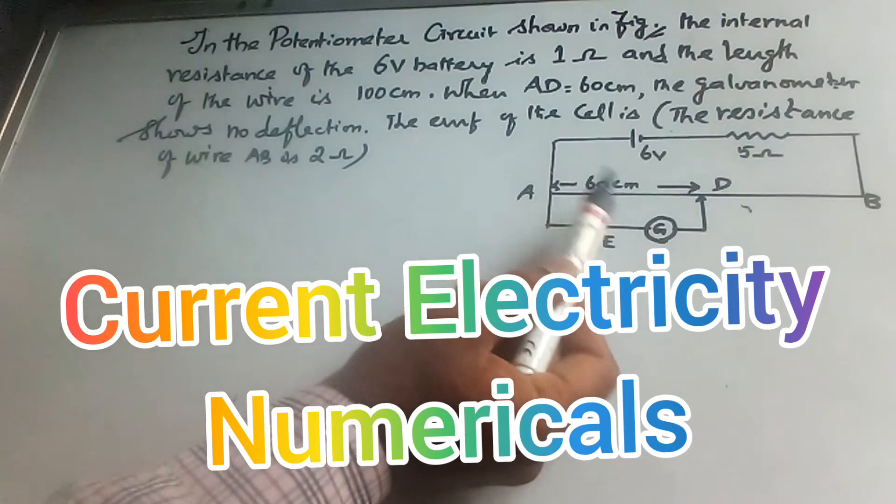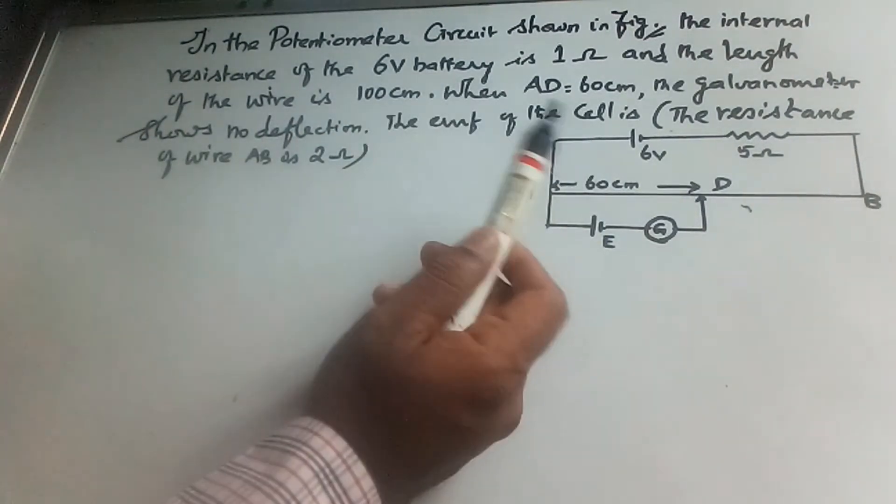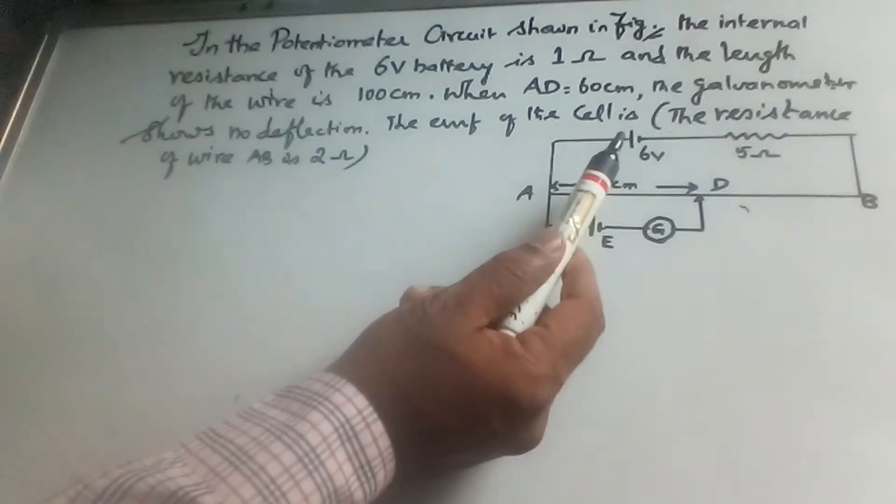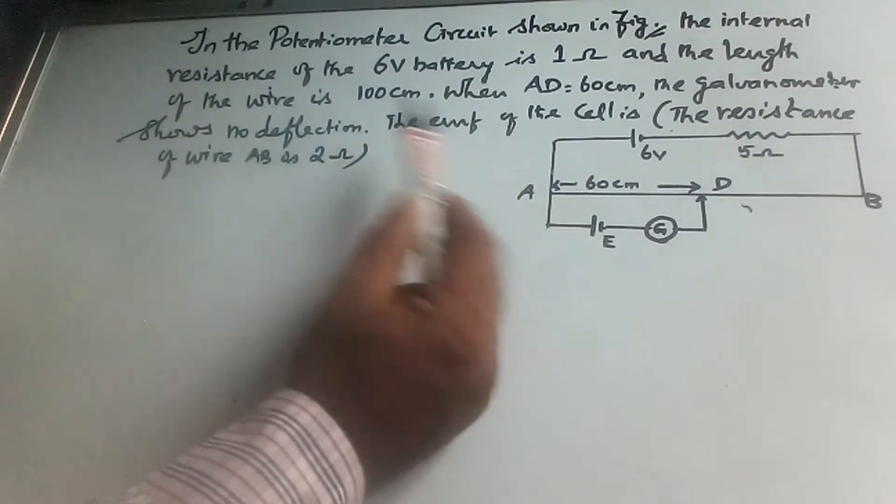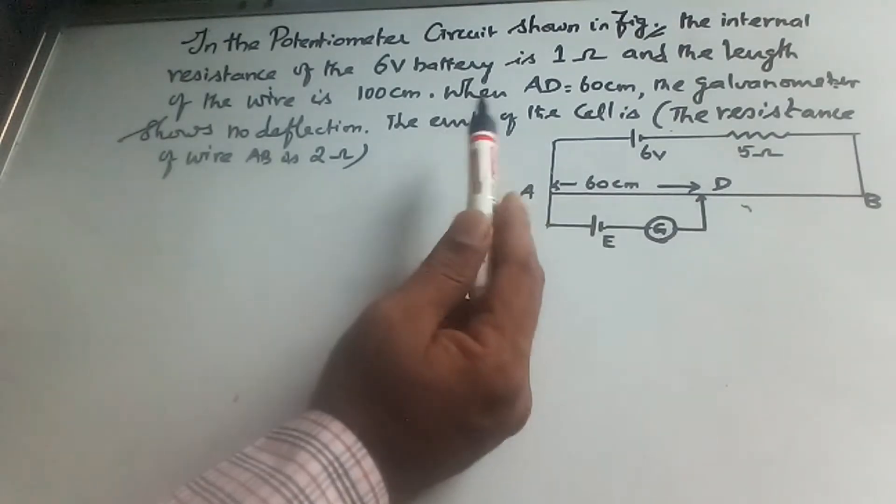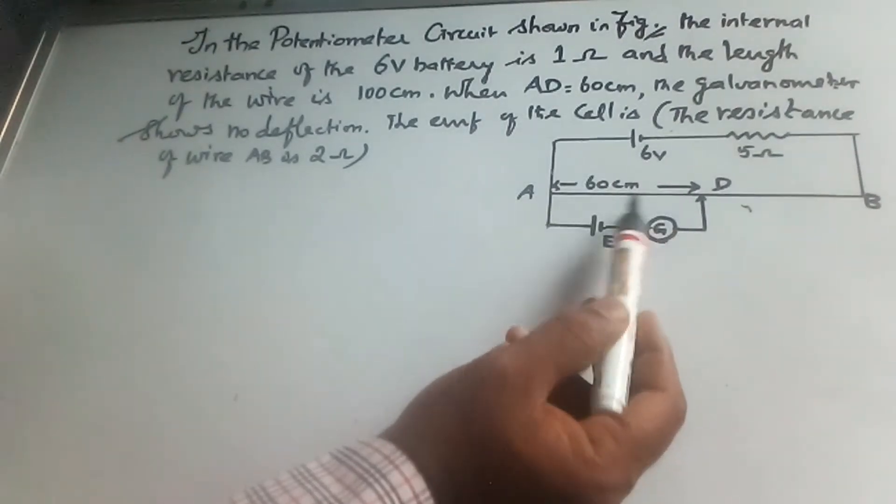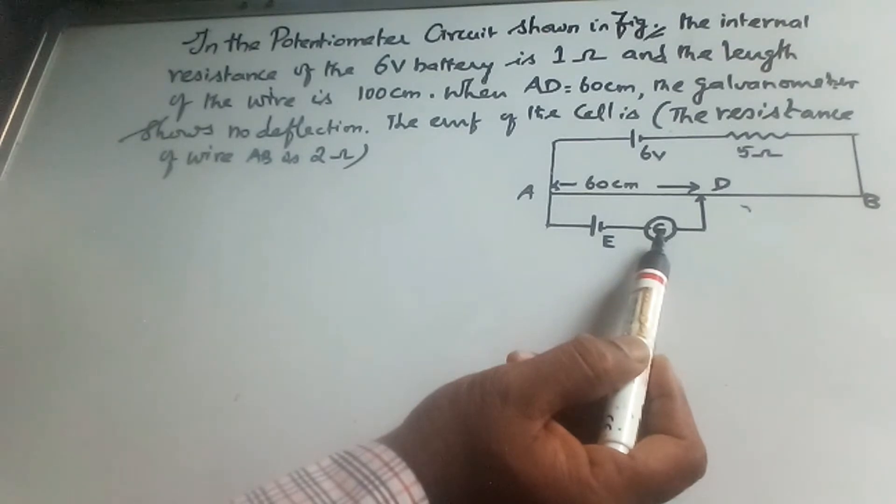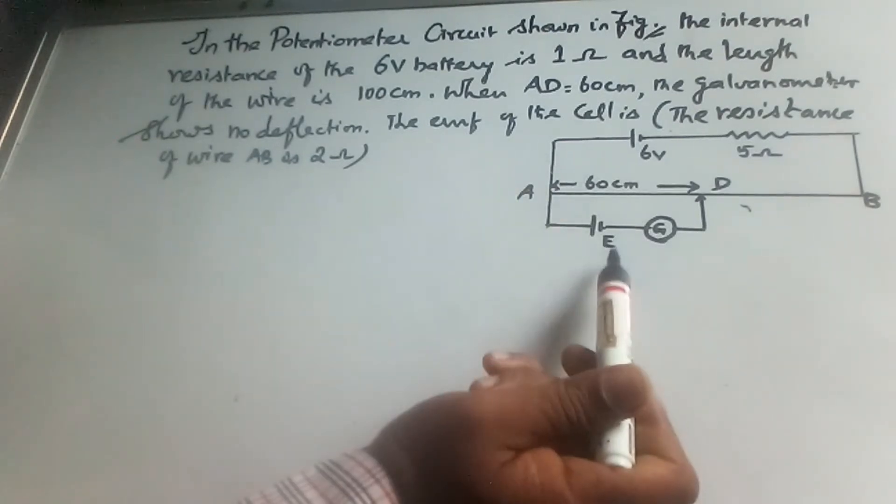In the potentiometer circuit shown in figure, the internal resistance of the 6 volt battery is 1 ohm and the length of the wire is 100 cm. When AD equals 60 cm, what will be the EMF of the cell?